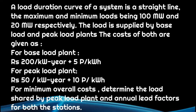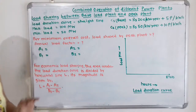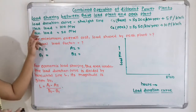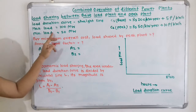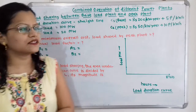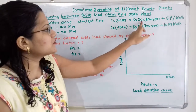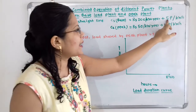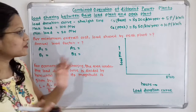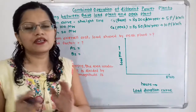Let us first understand the given data. The load duration curve is given in the form of a straight line and it varies between maximum load 100 megawatt and minimum load 20 megawatt. The costs for the base load plant and peak load plant are also given. For base load plant we will use suffix 1, so C1 is equal to Rs. 200 per kilowatt year plus 5 paise per kilowatt hour. For peak load plant we will use suffix 2, so C2 is equal to Rs. 50 per kilowatt year plus 10 paise per kilowatt hour.